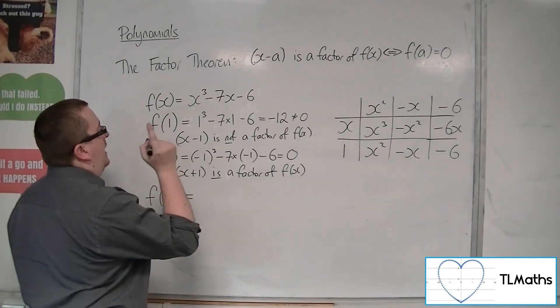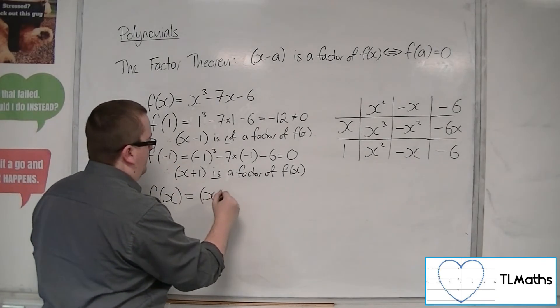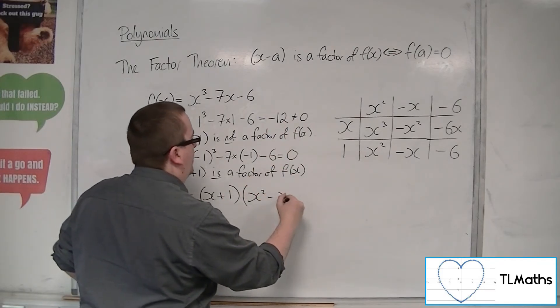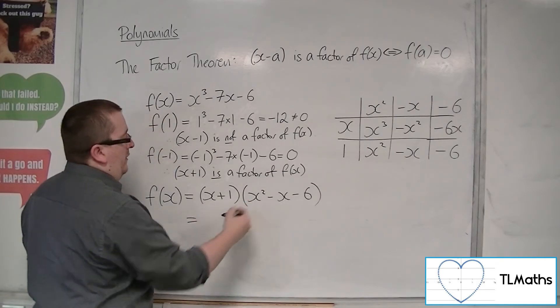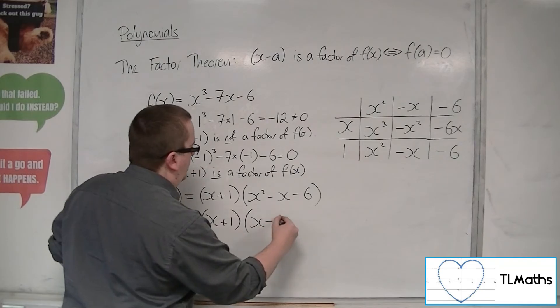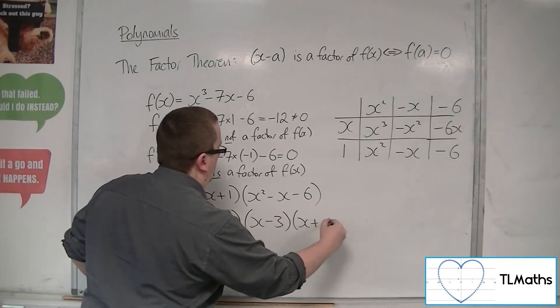So that means f of x can be written as x plus 1 times x squared minus x minus 6. Now this is a quadratic I can factorise. So that's x minus 3, x plus 2.